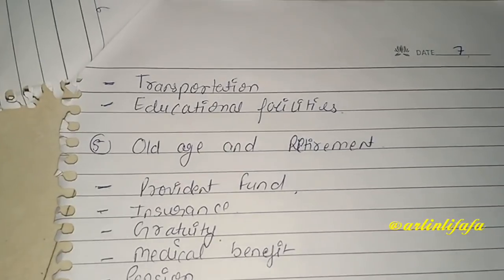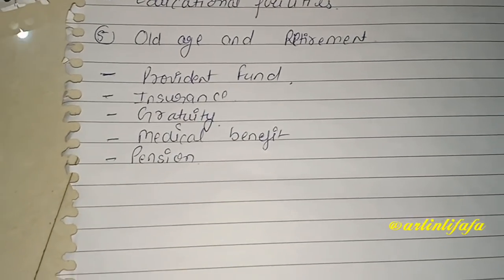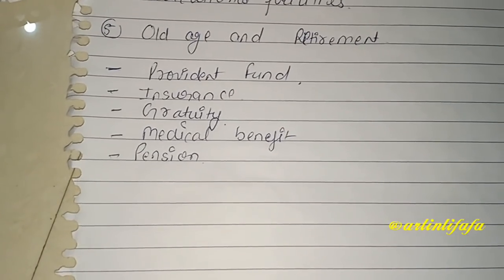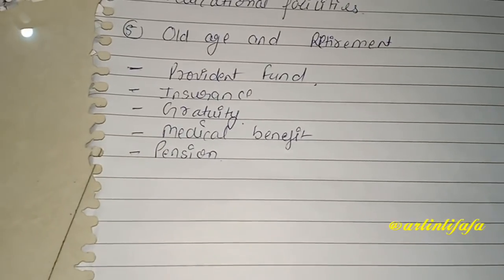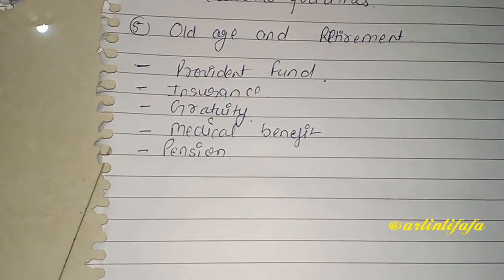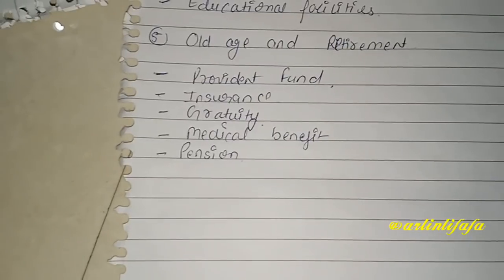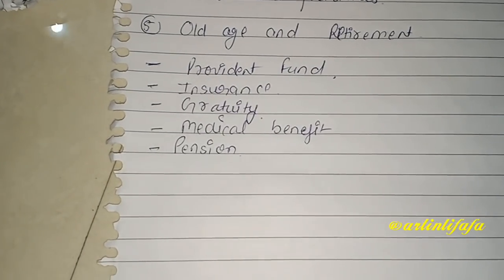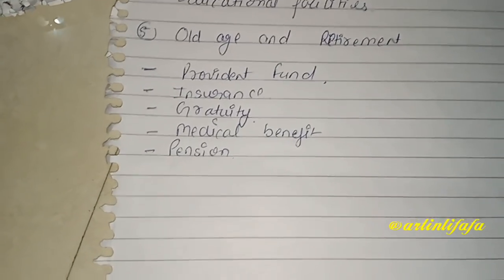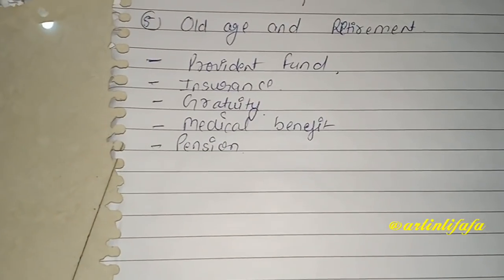آخری type ہے old age and retirement۔ Retire ہونے پر fringe benefits ملتے ہیں جیسے provident fund — ہماری salary میں سے cut ہوتا ہے، insurance دیتے ہیں، gratuity دیتے ہیں — جو کہ کسی organization میں particular سال تک continue کام کرنے پر ملتی ہے — اور medical benefit یا pension بھی دیتے ہیں۔ یہ fringe benefits ہوتے ہیں جو normal salary اور incentive سے الگ ہوتے ہیں۔